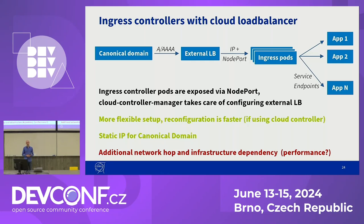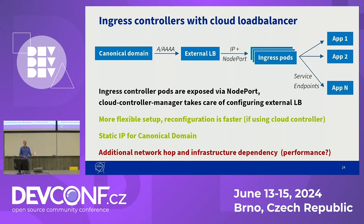However, we need to consider that now we have an additional network hop in our setup. For us, operating everything on-premises, it's also another infrastructure dependency to keep in mind. This might not be something you're concerned about if you're running in a public cloud, because you're depending on the public cloud provider anyway. I've also put a performance question mark here, because in our case we're using software-based OpenStack Octavia load balancers, which we've seen don't necessarily handle highly concurrent connections or high bandwidth applications particularly well. Again, maybe not your problem if you're running in a public cloud or if you have a hardware load balancer, but it's just something to keep in mind.